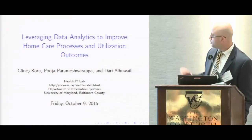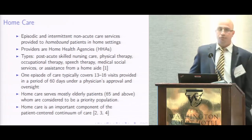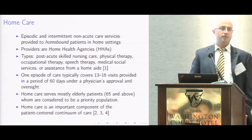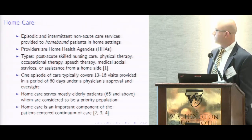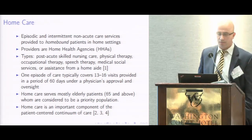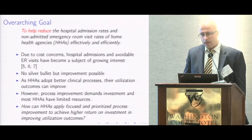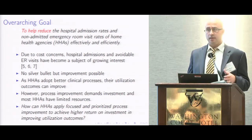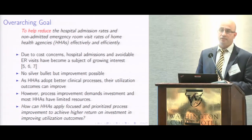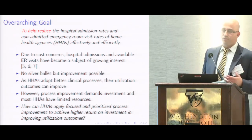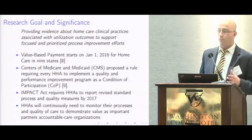This is a study by myself and my PhD students, Pooja and Dari, from the University of Maryland, Baltimore County. How many of you know about home care? This is provided by home health agencies under a physician's order, and it covers skilled nursing care, physical therapy, occupational therapy, or sometimes assistance from a home aide. We are trying to understand how we can improve processes in home health agencies to reduce hospital admission rates and avoidable ER visit rates for home care patients. However, home health agencies have very limited resources, so they cannot spend a lot on improvement. How can we do this in a focused and prioritized manner? That was the essential question for this research.